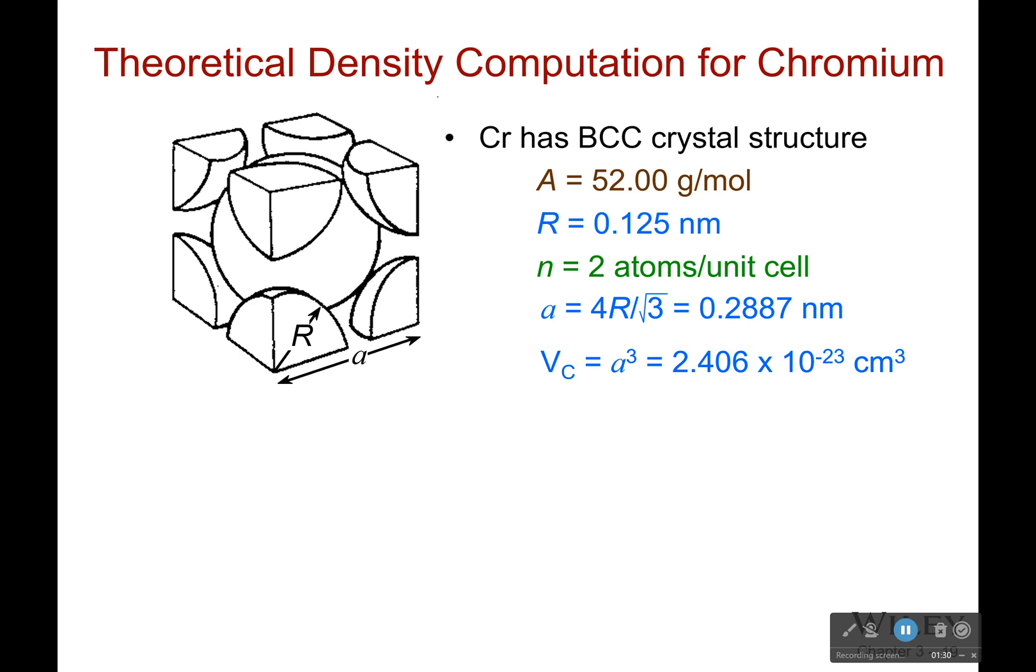Okay, so let's look at this for chromium. The big thing we have to figure out is what is A to start. Everything else we can look up fairly simply. It's got an atomic weight of 52 grams per mole. The radius is going to be 0.125 and that is for one chromium atom. So from here to here, that's 0.125 nanometers.